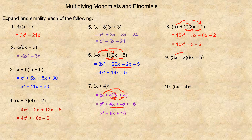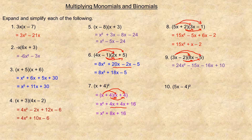For number 9, 3x times 8x is 24x squared. Then 3x times negative 5 is minus 15x, and negative 2 times 8x is minus 16x, and negative 2 times negative 5 — two negatives multiplied give a positive — so it's plus 10. The like terms negative 15x and negative 16x add to negative 31x. The final answer is 24x squared minus 31x plus 10.